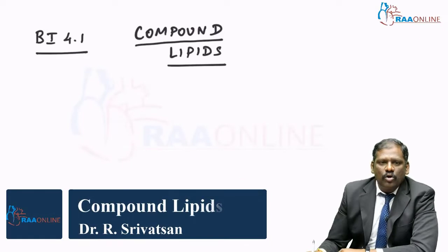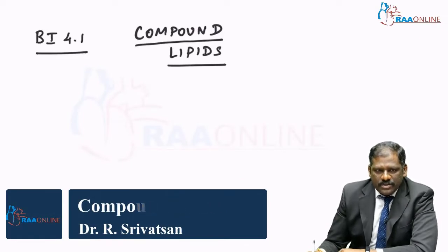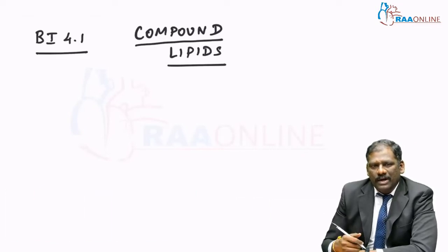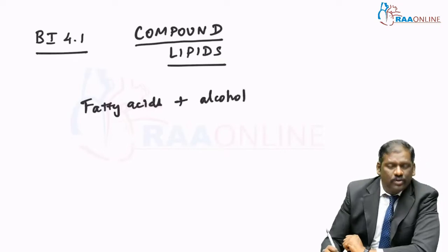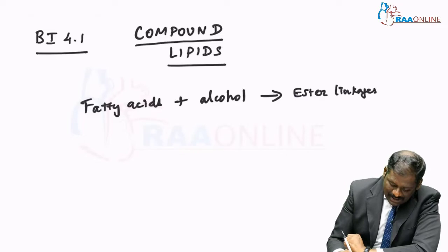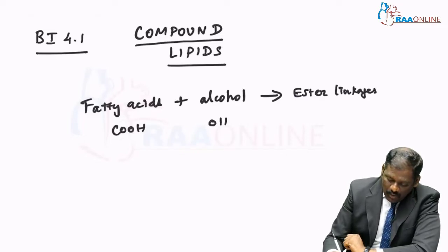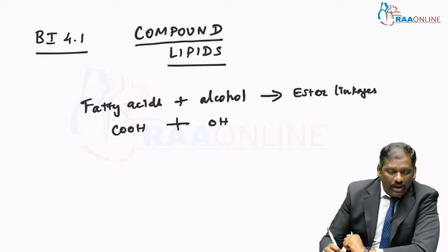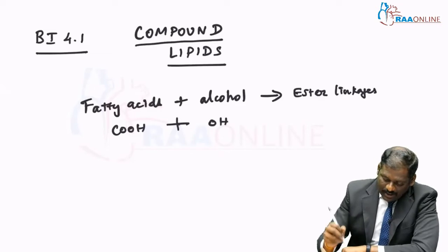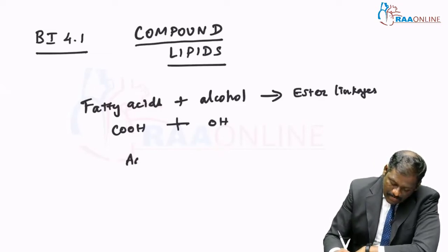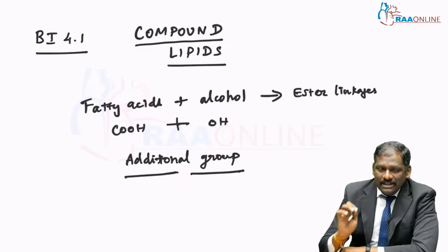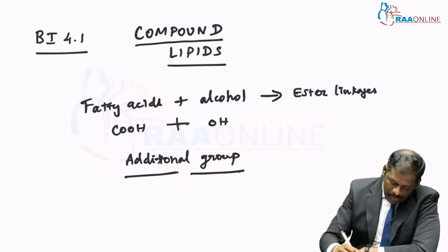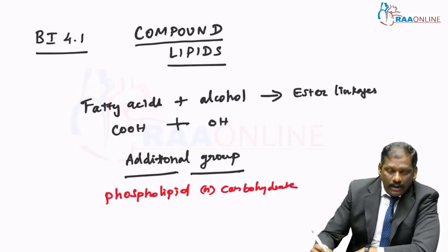Hi, hello everyone, welcome to RAW Online. This is Dr. Stevenson, your faculty for biochemistry, and today we will be discussing compound lipids. So what are these compound lipids? They are nothing but fatty acids combined to alcohol through ester linkages. The fatty acid has a COH group and alcohol has an OH group, so these two combine to form an ester linkage, and to this some kind of an additional group gets attached — this could be a phospholipid, a carbohydrate, or a protein.